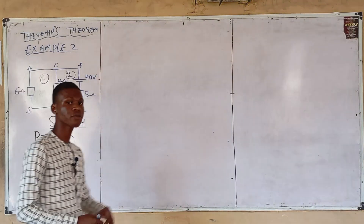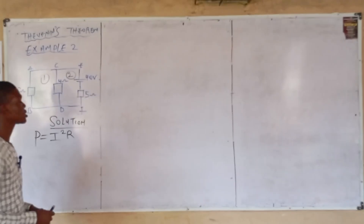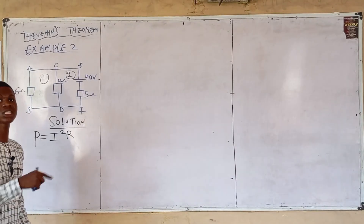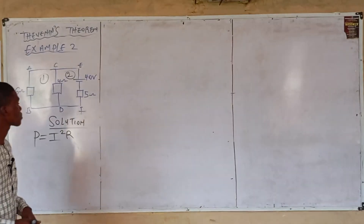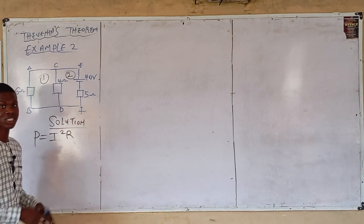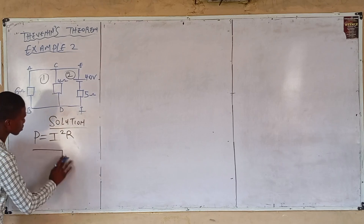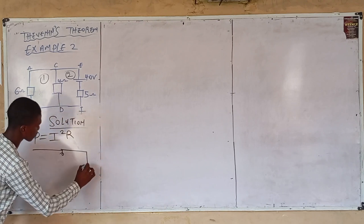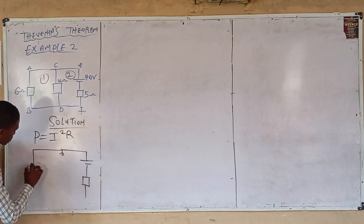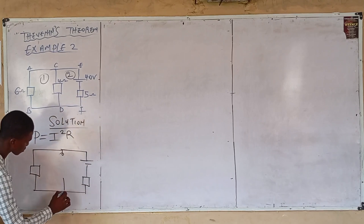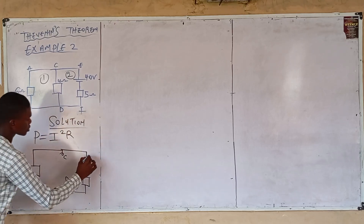Solving for the current in the 4-ohm resistor — Step 1: short circuit the load resistor. The load resistor is the 4-ohm resistor, because it is the resistor for which you are looking for the current. Short circuiting means disconnecting the 4-ohm resistor. We have points C and D, and the source is 40 volts.